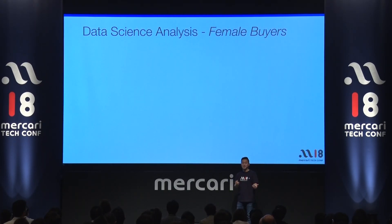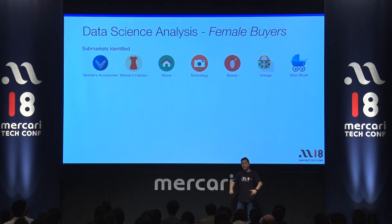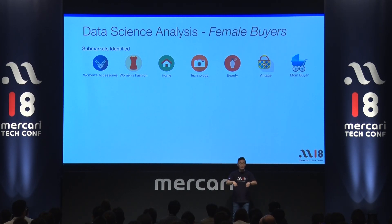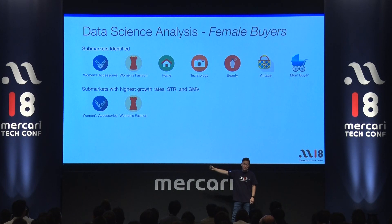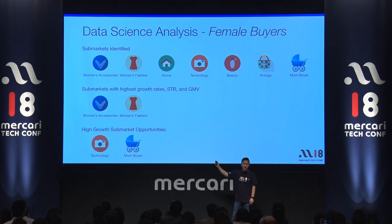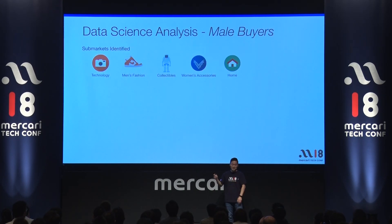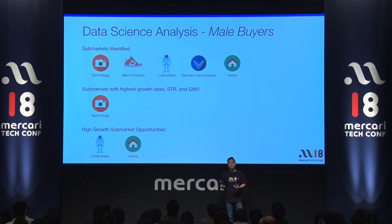If you do further analysis, we can have a lot more information coming out of it. And that's what data science does — when a machine does some computation and spits out some information, we still sometimes need humans to go in and dig in and do some analysis. In this case, for female buyers, top categories are of course accessories and fashion, but high growth categories are technology and mom buyer. For male buyers, it's kind of obvious there's technology, but the high growth market is collectibles and home. Very interesting insights coming out of data science.